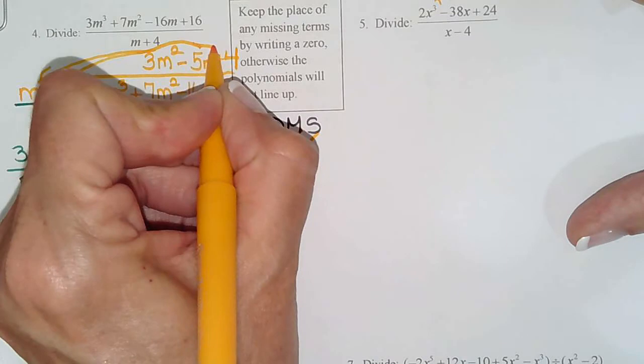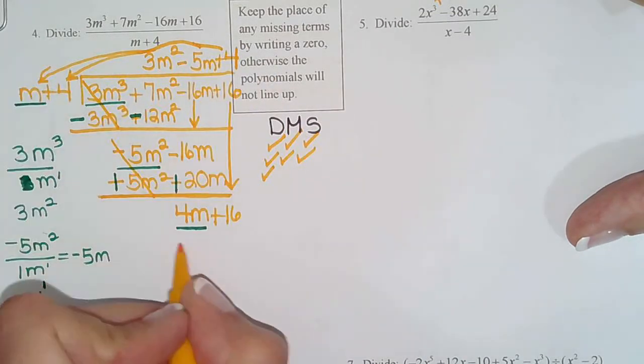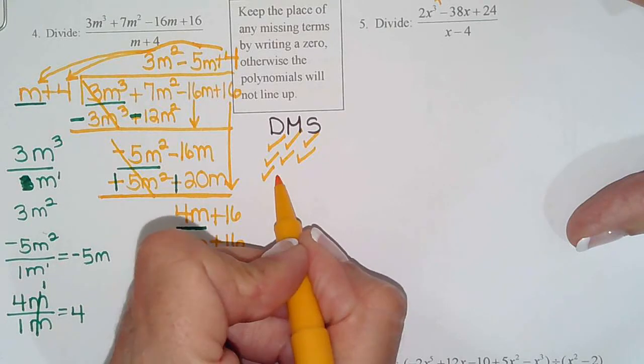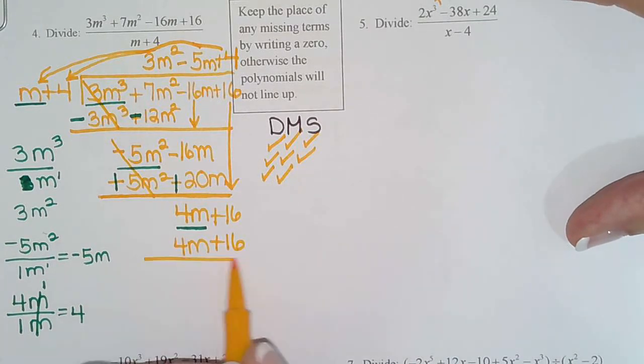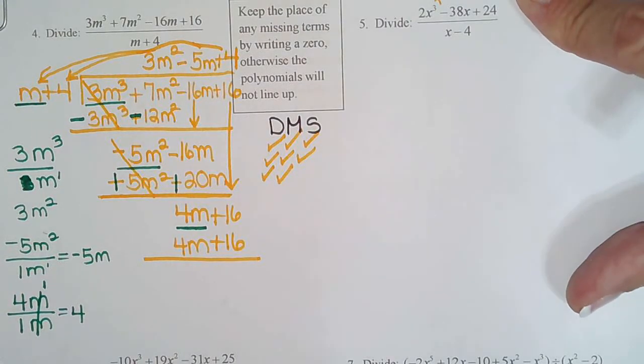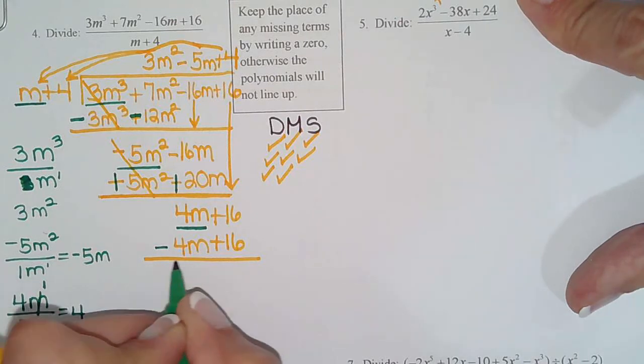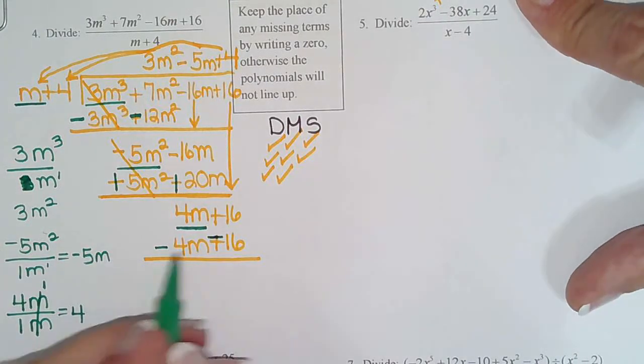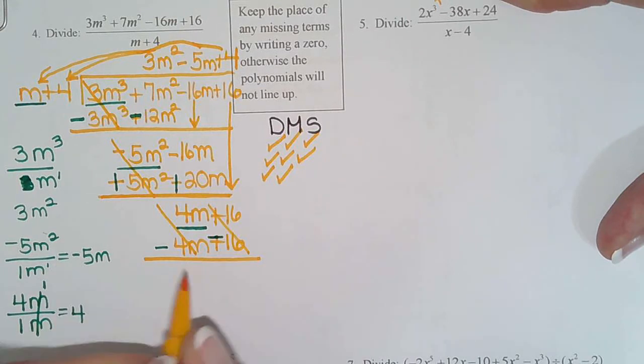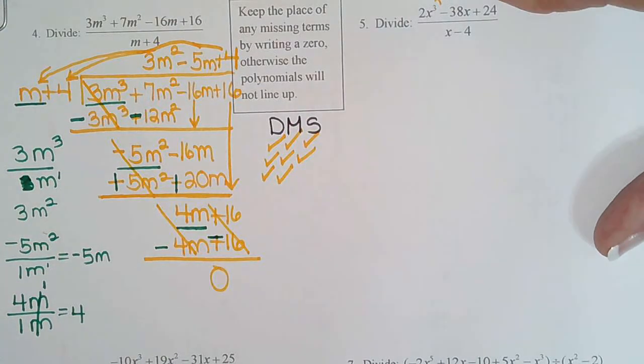Then I draw the line. Guess when's the most common time for students to forget to change the signs? Right now. So what happens is it makes them miss the remainder. So you still, every time you draw that line, you have to change the signs. So they were both positive. So I made them both negative. And my remainder is 4 minus 4, 0. 16 minus 16, 0. So my quotient is 3m squared minus 5m plus 4.